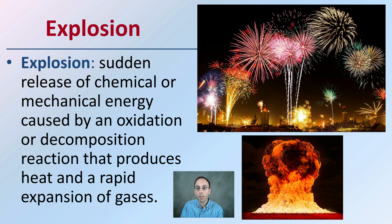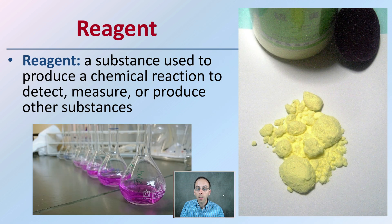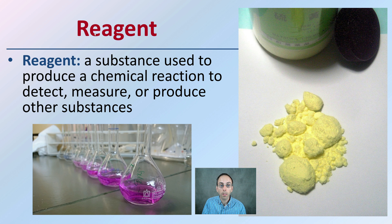Here we may see it like 4th of July fireworks — a very controlled explosion — and we can see a large fireball over a large area. A reagent is a substance used to produce a chemical reaction to direct, measure, or produce other substances. These are the initially starting substances, and reagents can be quite varied.